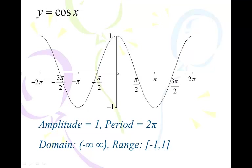The period of cosine is 2π. The amplitude is still 1 — distance from the average to the max, distance from the average to the min. The domain is negative infinity to infinity; you can put anything you want in for x and you'll never get a division by zero error. The range, the possible values of y, is negative 1 to 1. So these are your base graphs.